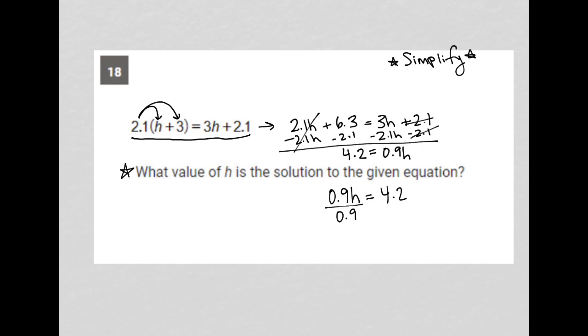Of course, I can divide both sides by 0.9, and I have h is equal to this. I do not have the use of a calculator for this section, so I'm going to need to do some math. 4.2 divided by 0.9.